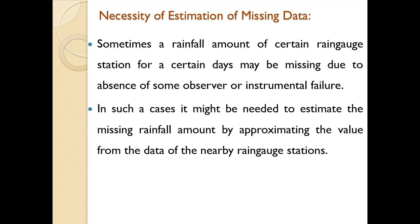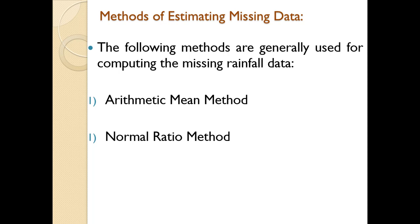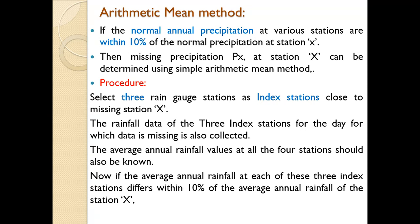Normally in case of any hydraulic structures, 25 to 30 years of rainfall data is required. Sometimes rainfall at a particular station may be missing for certain days due to absence of an observer or instrumental error. In that case one has to estimate the missing data for design of hydraulic structures. There are two methods commonly used: the first is arithmetic mean method and the second is normal ratio method.